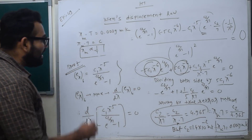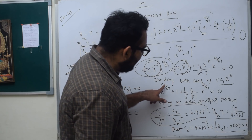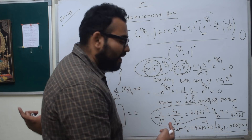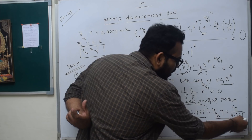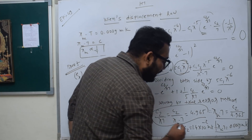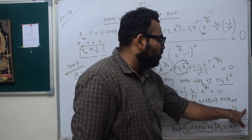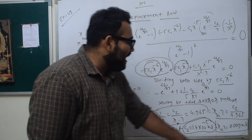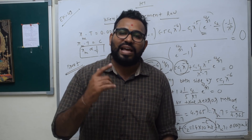So now, C2 upon λmT is equal to 4.965. The value of C2 is 1.4 into 10 raised to minus 2 meter Kelvin. Therefore, λm into T is equal to 0.0029 meter Kelvin. So we have proved Wien's Displacement Law. This proof is very important from the exam point of view. I hope you will like and share it with your friends.